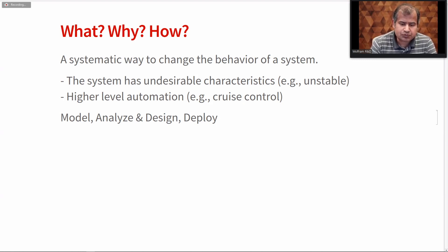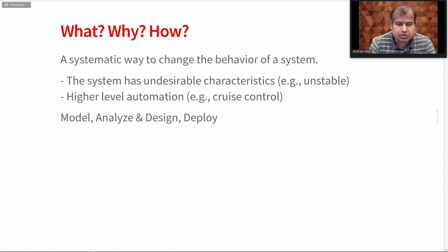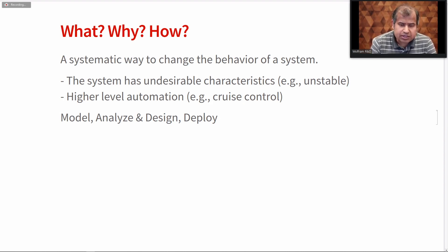For example, in cruise control, we can control the speed manually using the pedal, and that indirectly controls the position of the throttle plate or the voltage to the motor. But using cruise control, we set the speed we need, and the controller takes care of what setting the throttle plate or the voltage to the motor should be. To obtain a controller, we typically start with a model of the system, analyze it, design the controller, analyze the performance with the controller, and once satisfied, deploy the controller to the real world. This whole process is iterative.